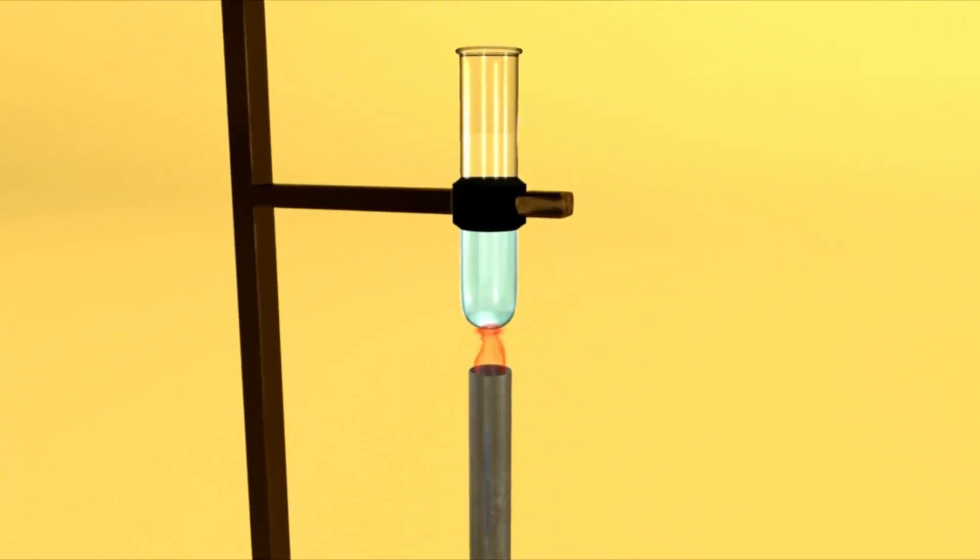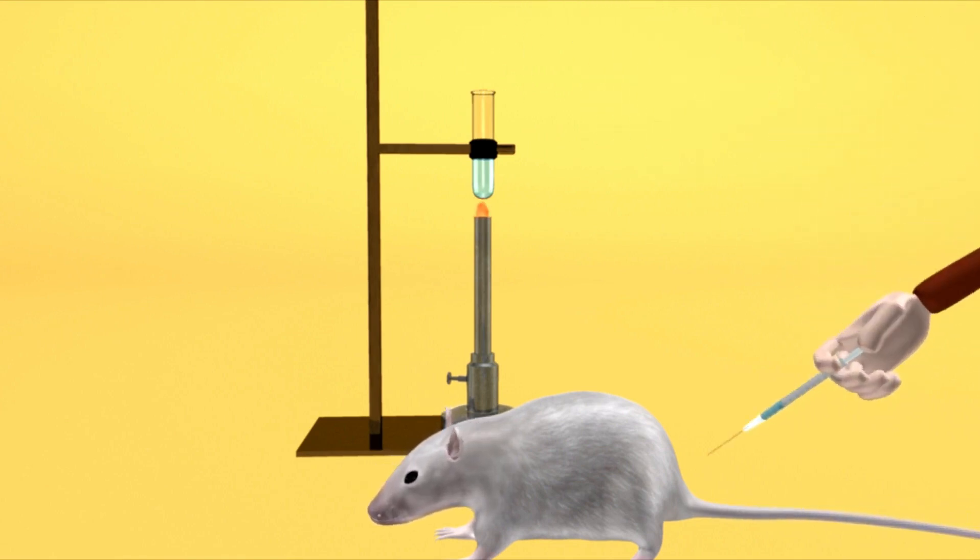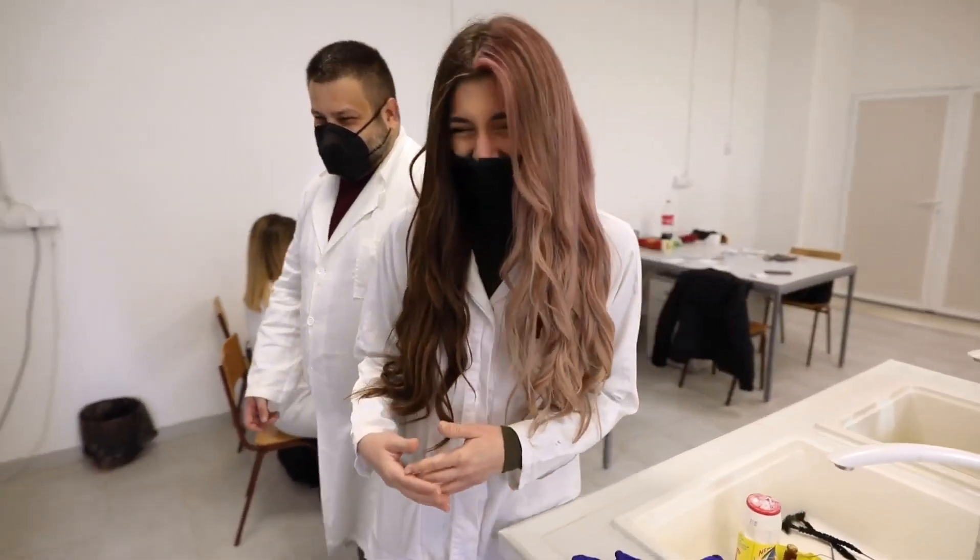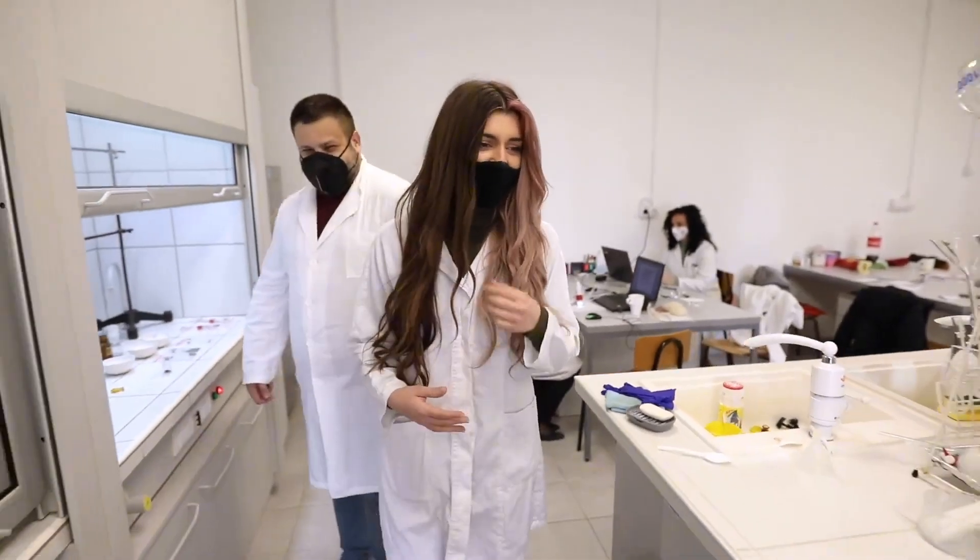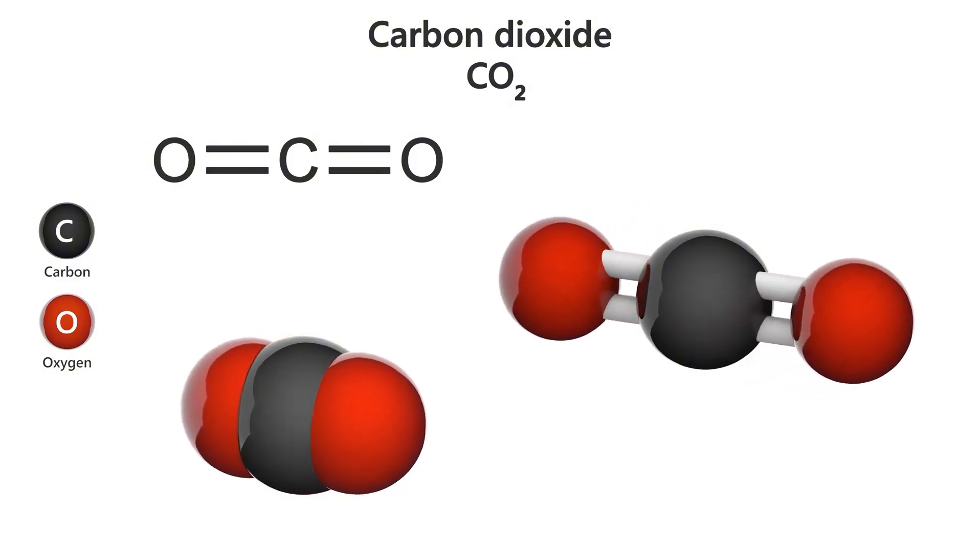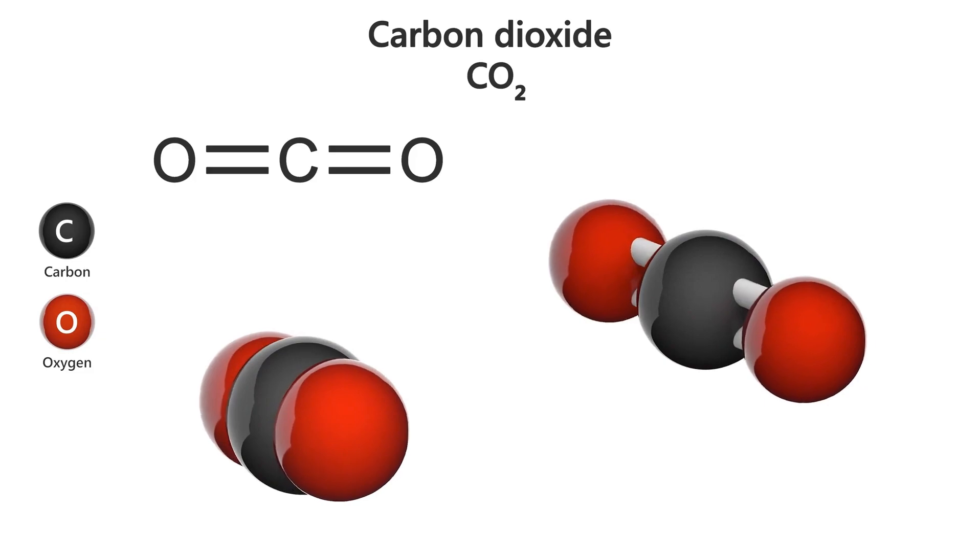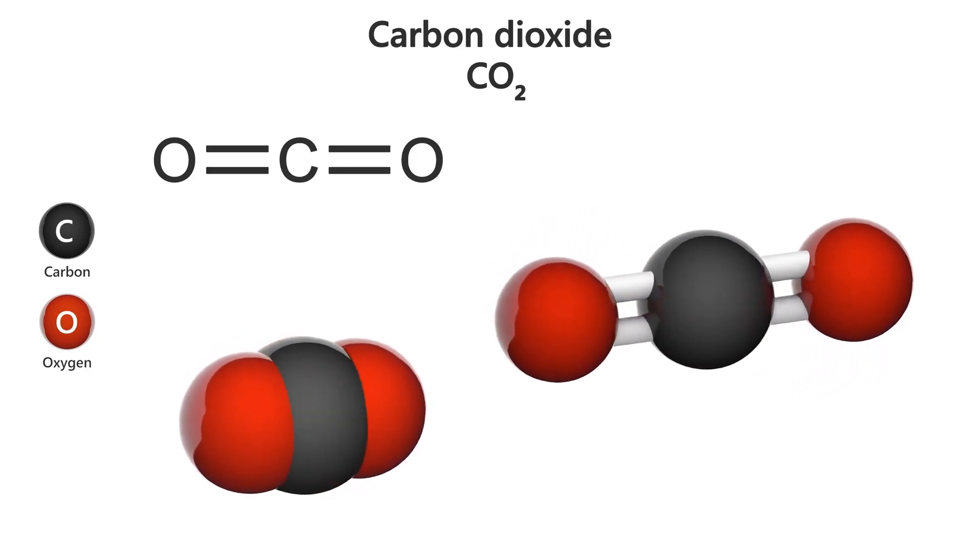Fortunately, K2-18b's host star, K2-18, is a red dwarf that emits less heat than our Sun. This is crucial because it means that despite the planet's proximity to its star, its surface isn't completely scorched. In fact, this lower luminosity could turn out to be a benefit as it has allowed scientists to detect vaporized water in the planet's atmosphere. This discovery adds to the growing evidence that K2-18b might just have the conditions necessary to support life.